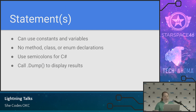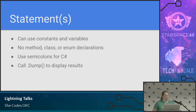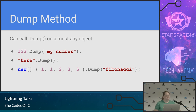Statements — now we can have multiple lines of code. In statements for C# or VB we can use constants and variables. We can't pull in other methods, classes, or enums though, because those aren't in the same scope as statements. We are going to end each line with a semicolon when using C#. And there's a dump method included in LINQPad — that's a big key to why I like to use it. You can basically call it on any object, like {1, 2, 3}.Dump(). It just spits out the results to the screen, and you can also give it a label.